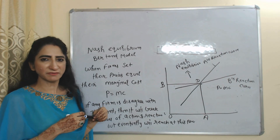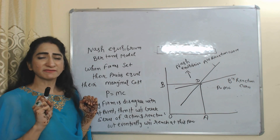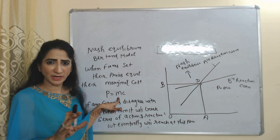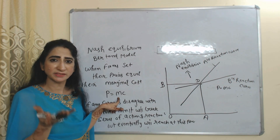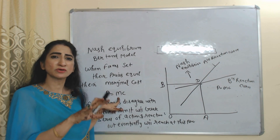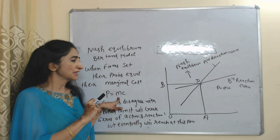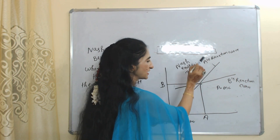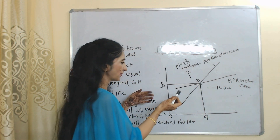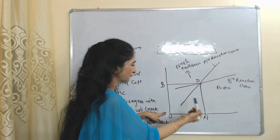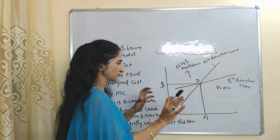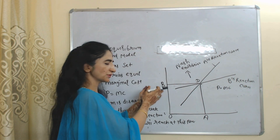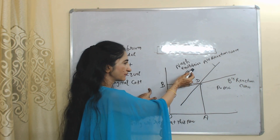Now we will see the Nash equilibrium under this model. Nash equilibrium is a point where prices are equal to marginal cost. This will be called the minimum price — the firm cannot reduce its product price further. Here the firm is just getting normal profit, and as we know, normal profit is already included in cost. At point D, firm B is charging price OB and firm A is charging price OA. Prices of both firms are equal to each other. These are called minimum prices, and this D point is called the Nash equilibrium point.